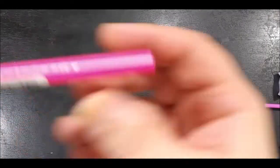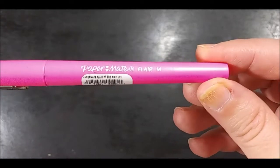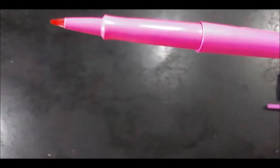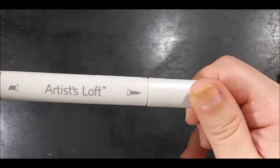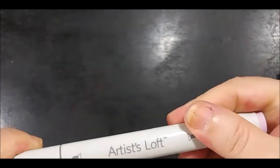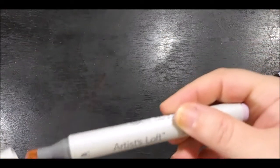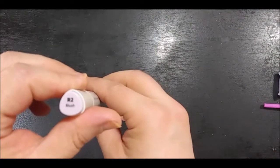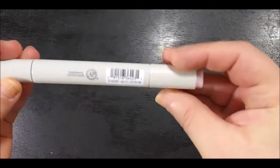Then I got a Paper Mate Flare in hot pink. And my favorite marker has got a brush tip on this end and a chisel on this end. It is in blush. I don't know if that's coming through, but here we go.